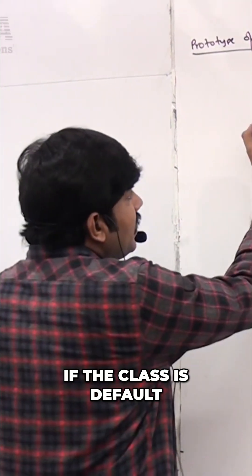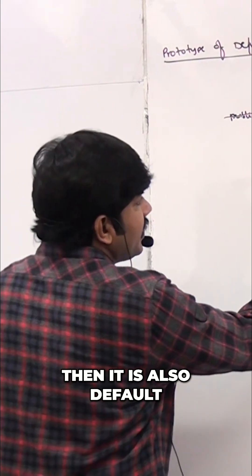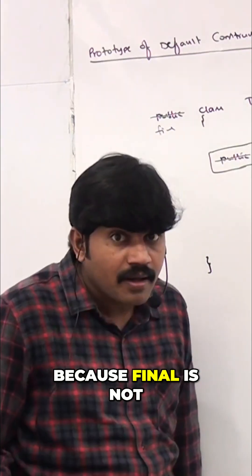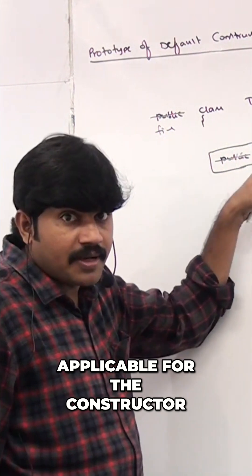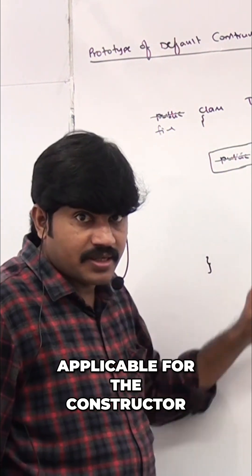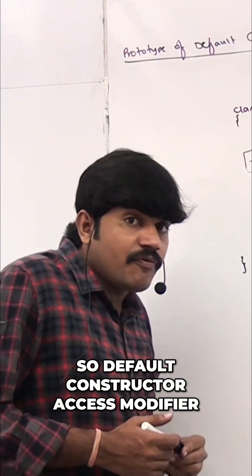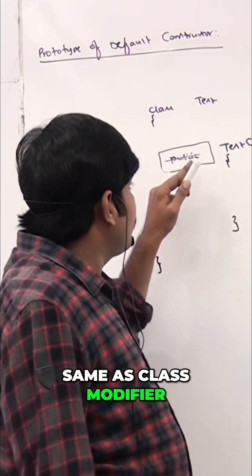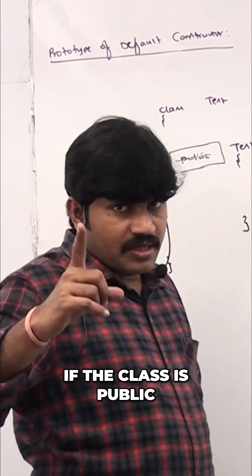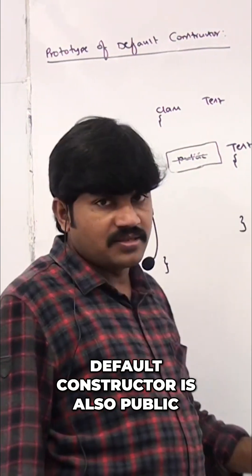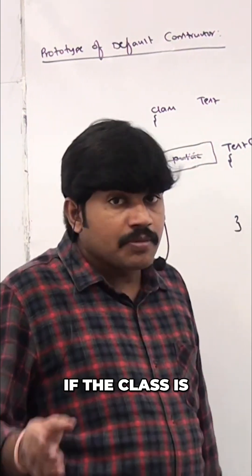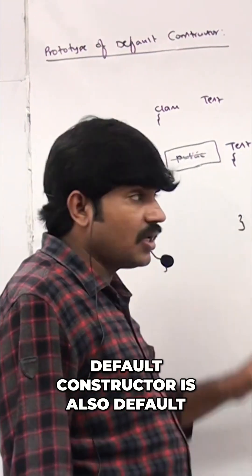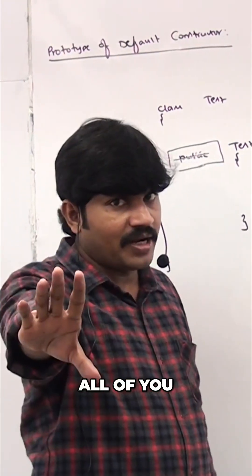If the class is default, then the constructor is also default. Remember: 'final' is not applicable for the constructor. So, default constructor access modifier is the same as class modifier — if the class is public, default constructor is also public; if the class is default, default constructor is also default. Is that clear?